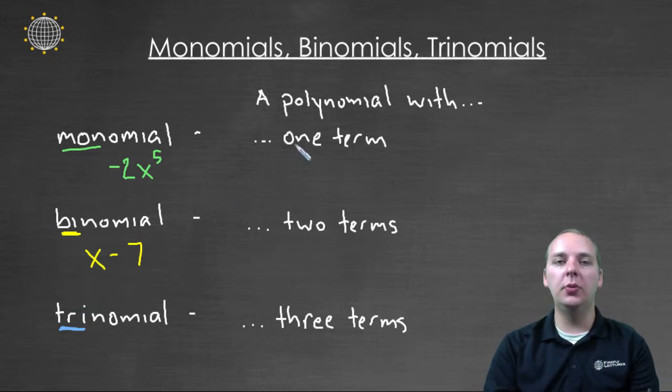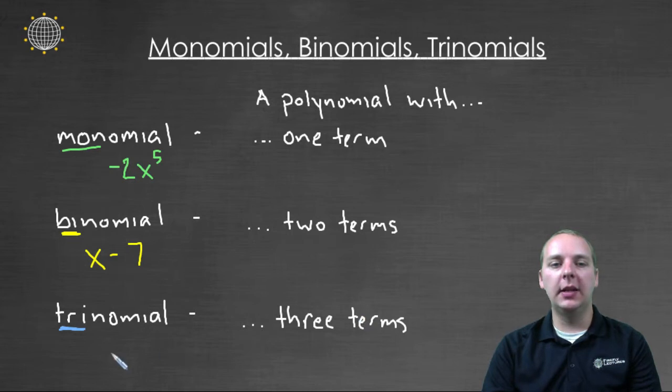And so a trinomial would be a polynomial that specifically has three terms. You might have something like three x squared minus four x plus one. That would be an example of a trinomial because it has one, two, three terms.